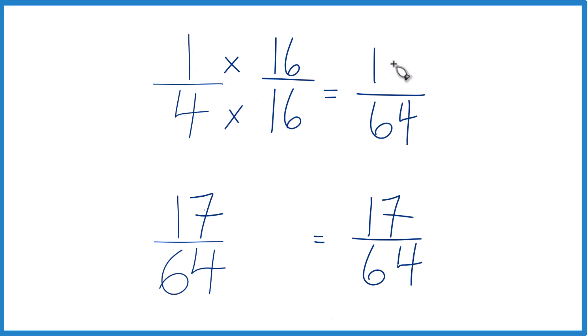1 times 16 is 16. Now we have the same denominators, compare the numerators. 17 is greater than 16, so 17/64 is greater than 16/64. And since these are equivalent, have the same value, 17/64 is also greater than 1/4. That's it.